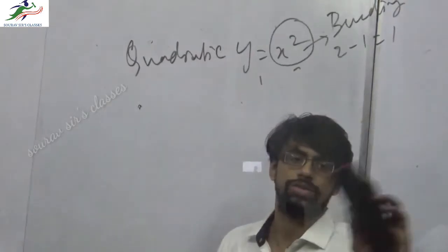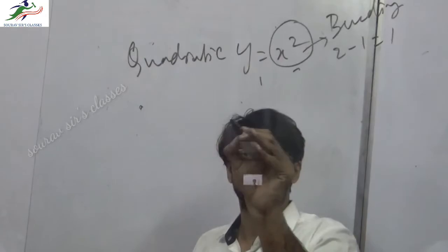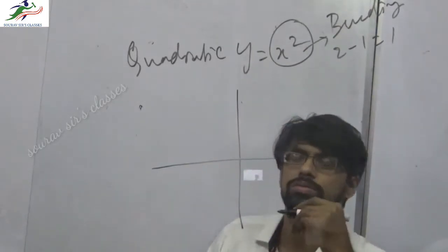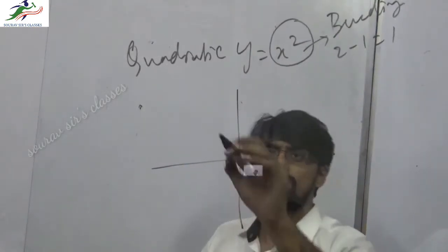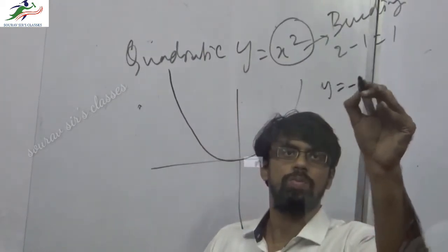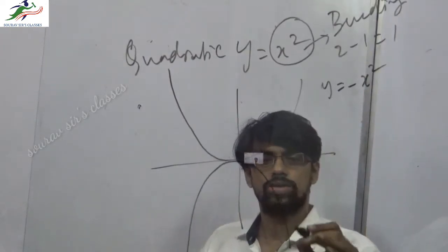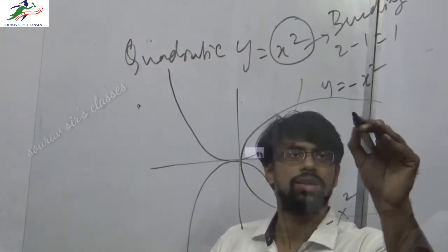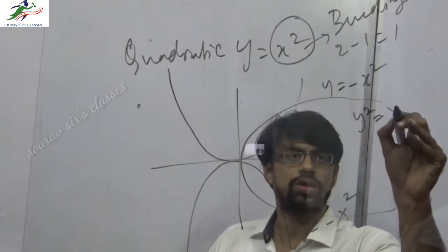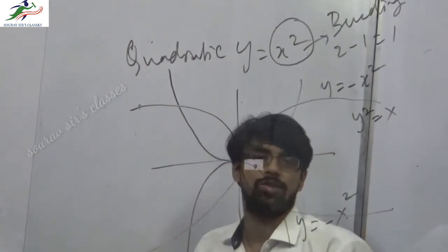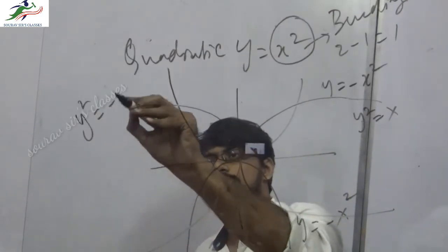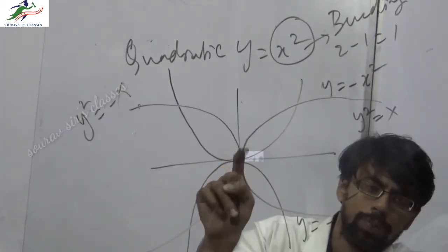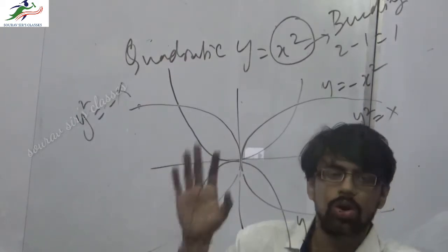For y equals x squared: first, this graph passes through the origin because when x equals 0, y equals 0. The parabola opens upward. For y equals minus x squared, it opens downward. If we switch to y squared equals x, it opens to the right — a sideways parabola. And y squared equals minus x opens to the left. These four together form what we call a butterfly diagram. All four pass through the common point called the origin.